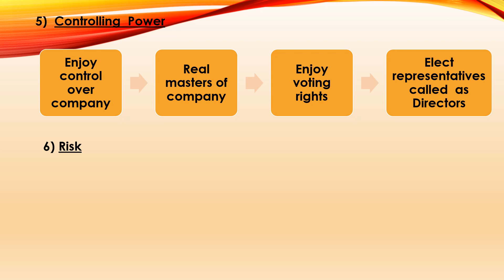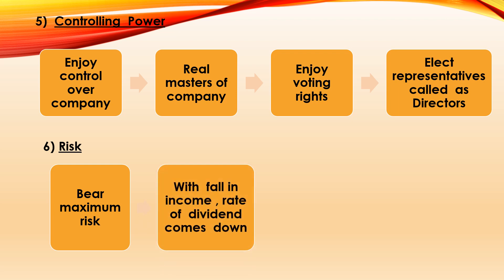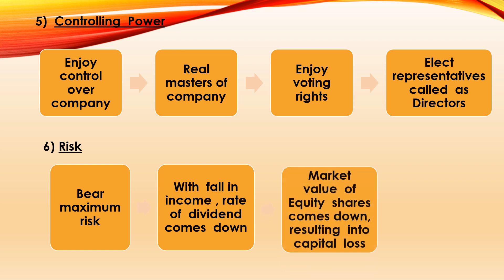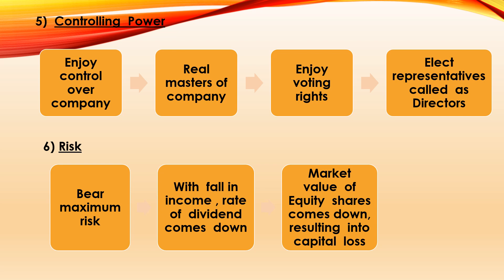The sixth feature of equity shares is risk. Equity shareholders are the real owners of the company, and risk is attached to ownership. Equity shareholders bear the maximum risk — with a fall in income, the rate of dividend comes down, which results in a fall in market value of equity shares, further resulting in capital loss. They are said to be risk takers in a joint stock company, and are also called shock absorbers because they have to bear all risks and losses associated with ownership of the company.